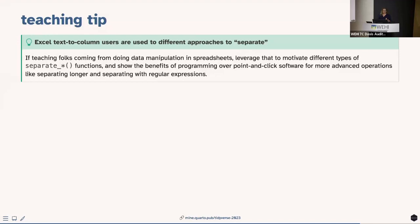Teaching tip: for folks from a spreadsheet background — Excel or Google Sheets users who know 'text to columns' — this functionality will feel familiar. Even though it looks like new R functionality, it puts a name to something they've already encountered. It's just doing it in R with more power and explicit options.